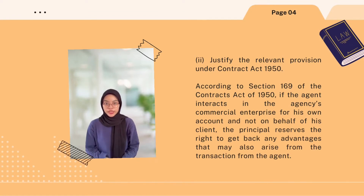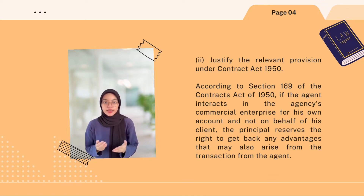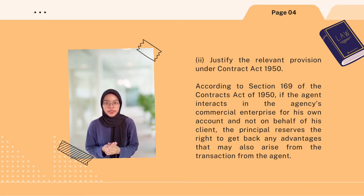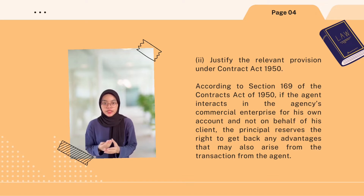Justifying the relevant provision under the Contract Act: according to Section 169 of the Contract Act, if the agent transacts in the agency's commercial business for his own account and not on behalf of his principal, the principal reserves the right to recover any advantages that may arise from the transaction. This means if the agent conducts agency business on his own account without the knowledge of the principal, the principal can recover the extra money from the transaction.